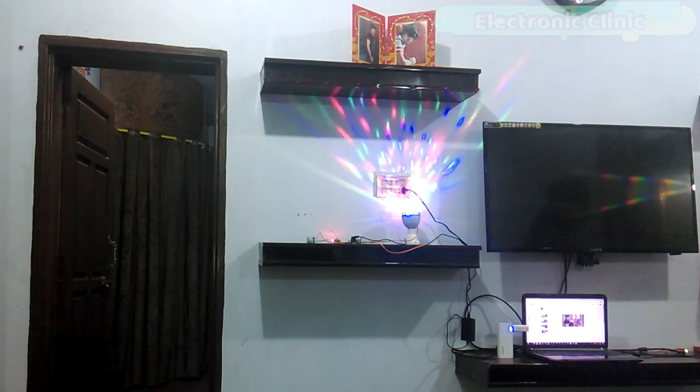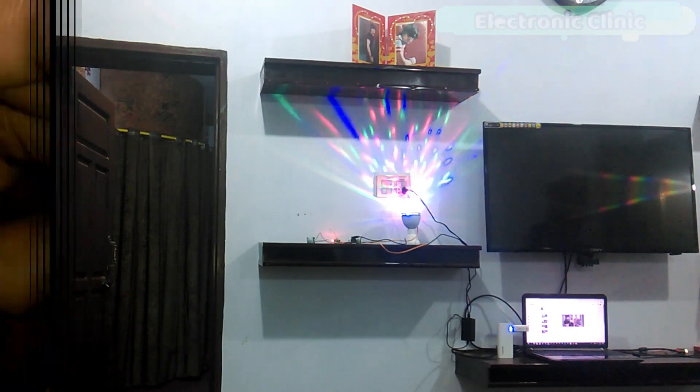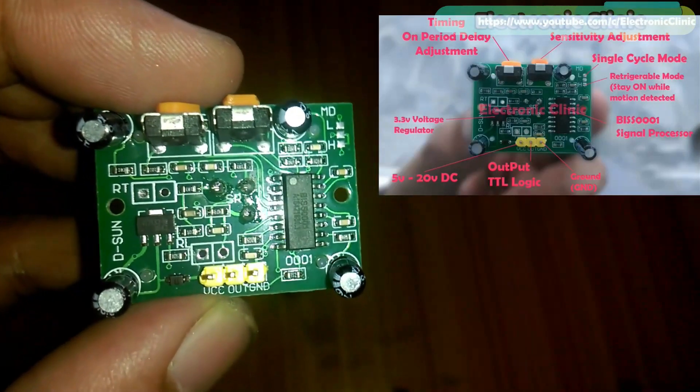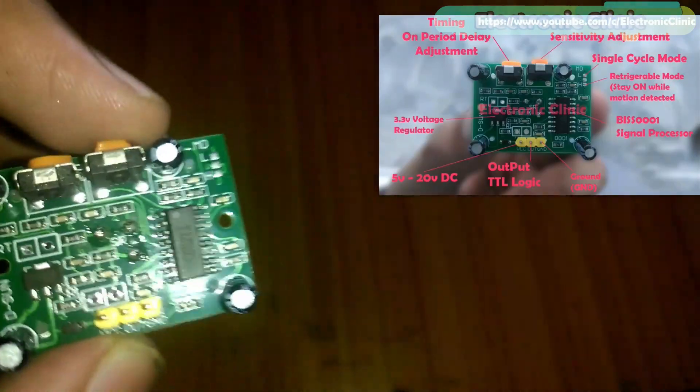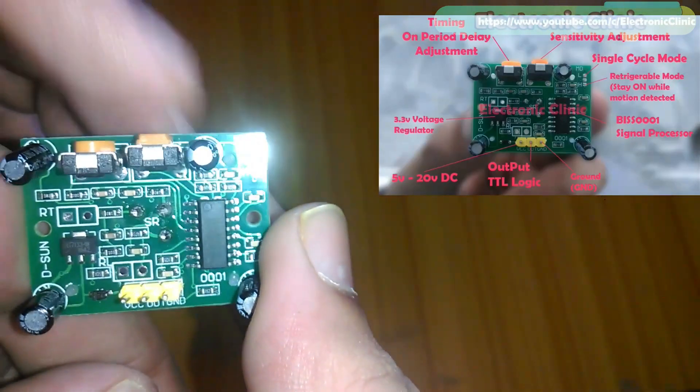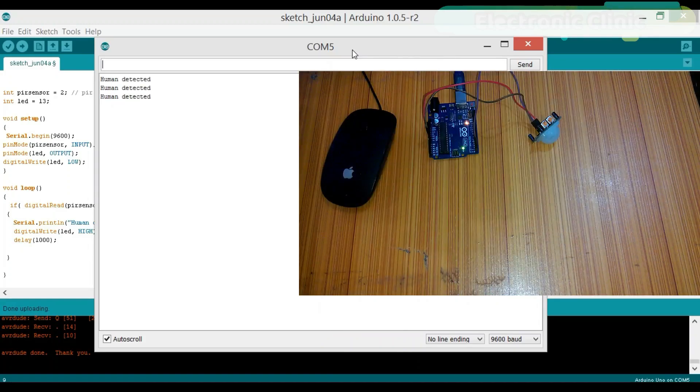So far this is my third tutorial on a PIR sensor. In first tutorial I covered all the basics including the pinouts, the purpose of the variable resistors and how to use a PIR sensor with Arduino.